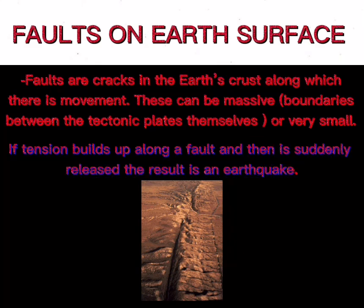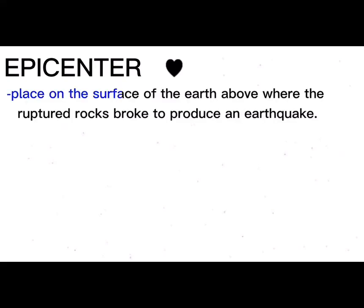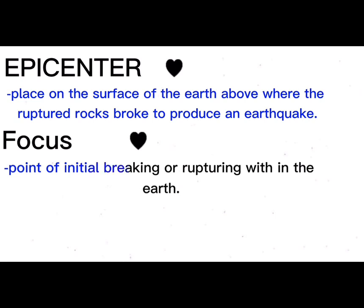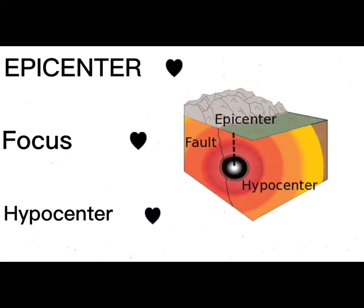If tension builds up along a fault and is suddenly released, the result is an earthquake. The basic earthquake features are: Epicenter — the place on the surface of the earth above where the ruptured rock breaks to produce an earthquake; Focus — the point of initial breaking or rupturing within the earth; and Hypocenter — directly below the focus, the point within the earth where an earthquake rupture starts.